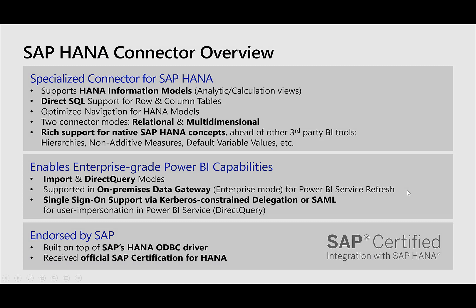The SAP HANA connector is a specialized connector that supports HANA informational models like analytic and calculated views. It also supports direct SQL for row and column tables, and it has two modes of operation: relational and multidimensional. In relational mode, it treats SAP HANA as a relational data source. In multidimensional mode, it treats HANA as a multidimensional data source.